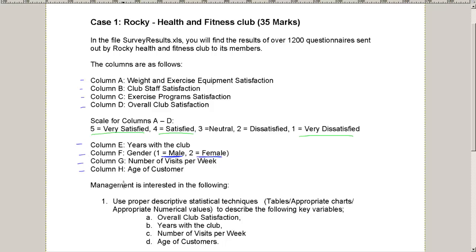like what is your satisfaction rating of the weight and exercise equipment, or how many years have you been with the club - if we ask people different questions, every question is going to create a new variable. So we have the responses to 8 different questions, so we have 8 different variables.